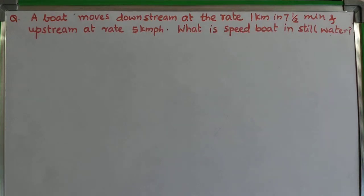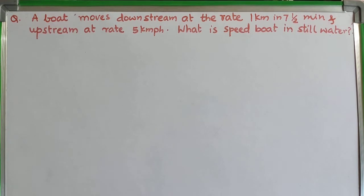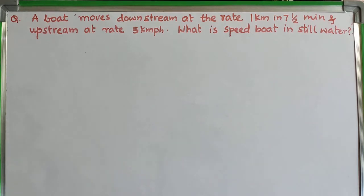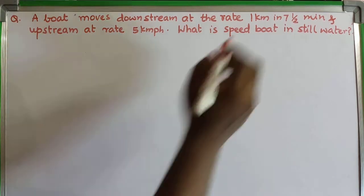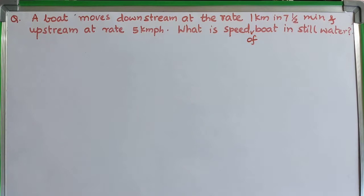Hello everyone. Today we have a question on relative velocity — some people call it an upstream-downstream problem. A boat moves downstream at a rate of one kilometer in seven and a half minutes, and upstream at the rate of five kilometers per hour. We need to find the speed of the boat in still water.